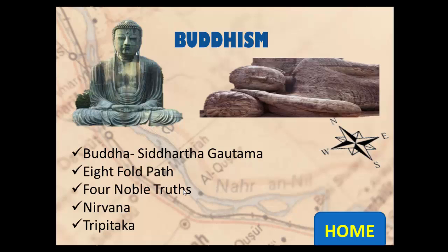The four noble truths as interpreted by seventh hour: first, all life is full of pain and suffering — 'life sucks.' Second, people are the cause of pain and suffering — 'people suck.' Third, you should overcome pain and suffering through control of the mind — 'try to be awesome.' Fourth, to reach awesomeness, follow the eightfold path — 'follow the eightfold path to awesomeness.'